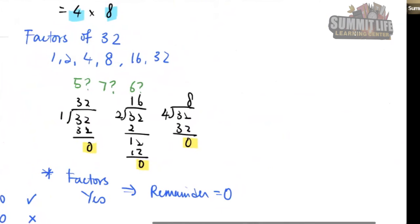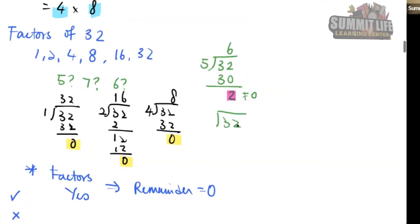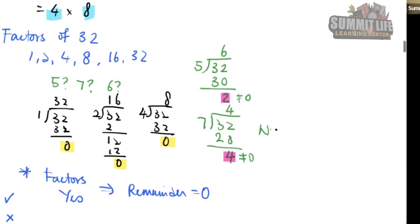32 divided by 5: you get 6 remainder 2, which is not 0 — so 5 is not a factor. Then 32 divided by 7: 7 times 4 is 28, you get a remainder of 4, which is not 0 — so 7 is not a factor. Not a factor for both of them, because the remainder is not 0.